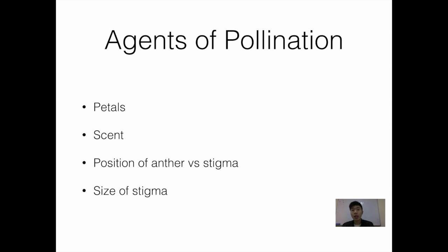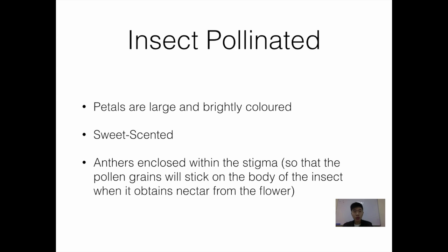Let me further elaborate using animal pollination. Looking at insect pollinated flowers — generally they are large and brightly coloured. They are also sweet scented, and both of these features help to attract insects to the flower.